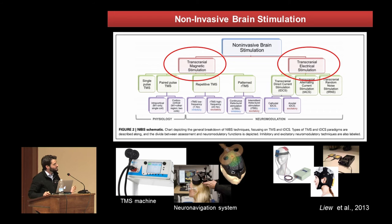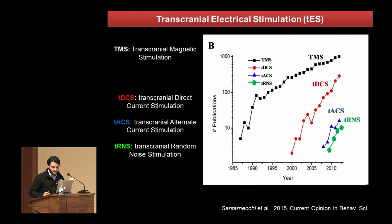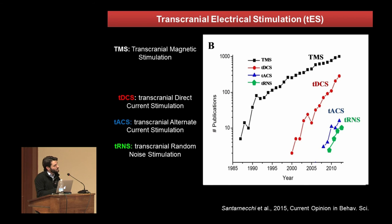What you can actually do is target specific networks on the basis of connectivity findings and test whether these connectivities are important. You can suppress or increase the activity of a region and see if cognitive performance changes. We are moving towards electrical stimulation — TDCS (direct current stimulation), alternating current stimulation, and random noise stimulation. I will show you a couple of examples about TACS, transcranial alternating current stimulation, which is the one I prefer to test my hypotheses.